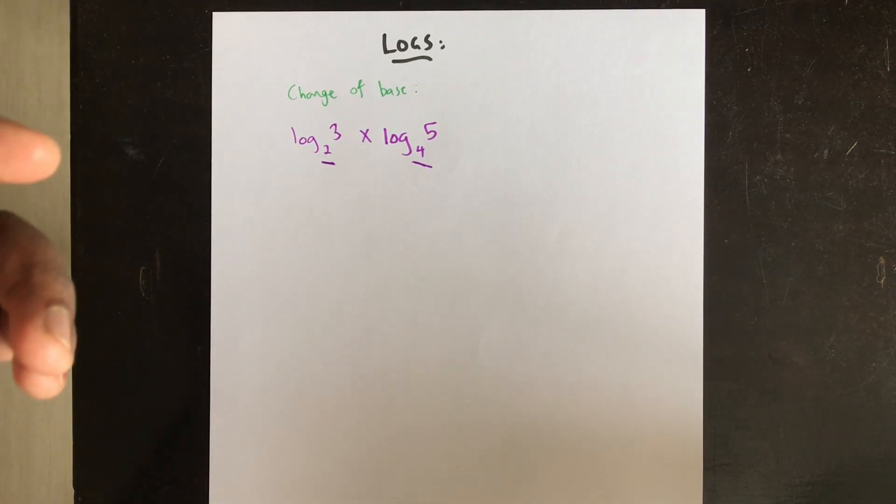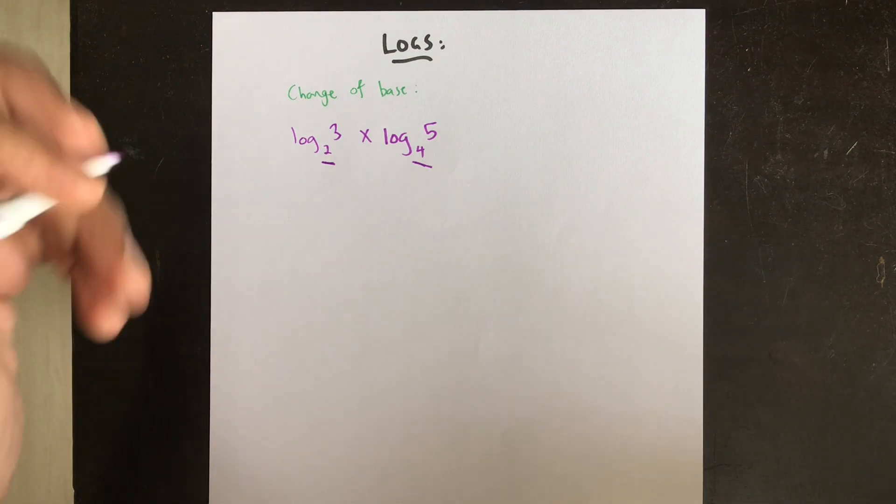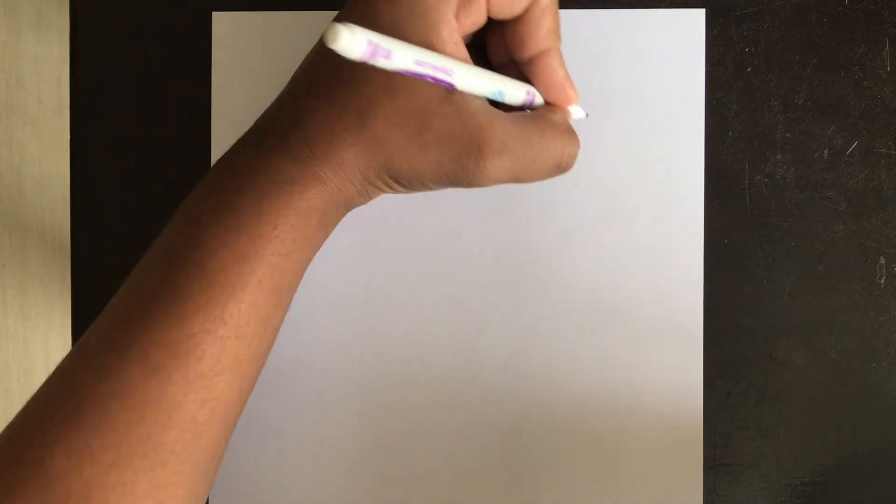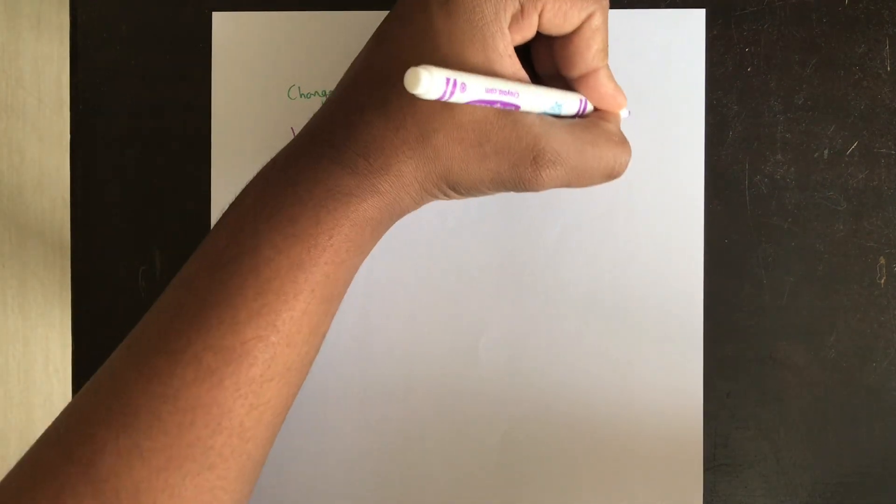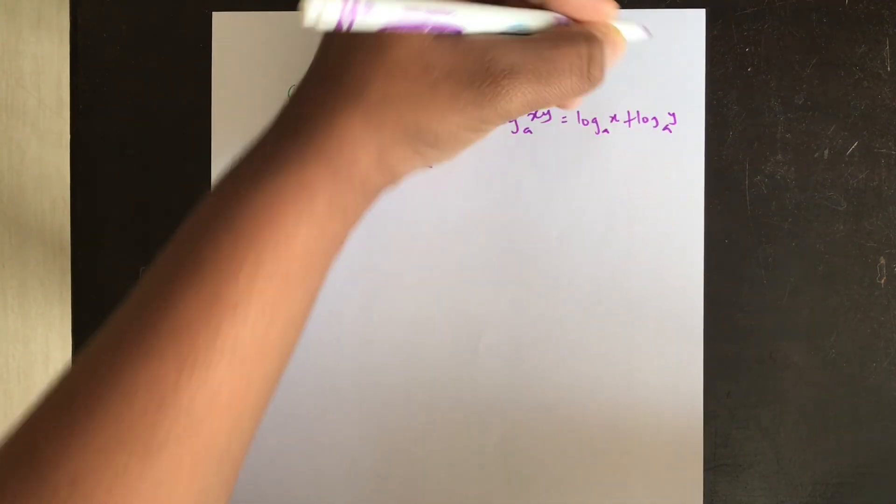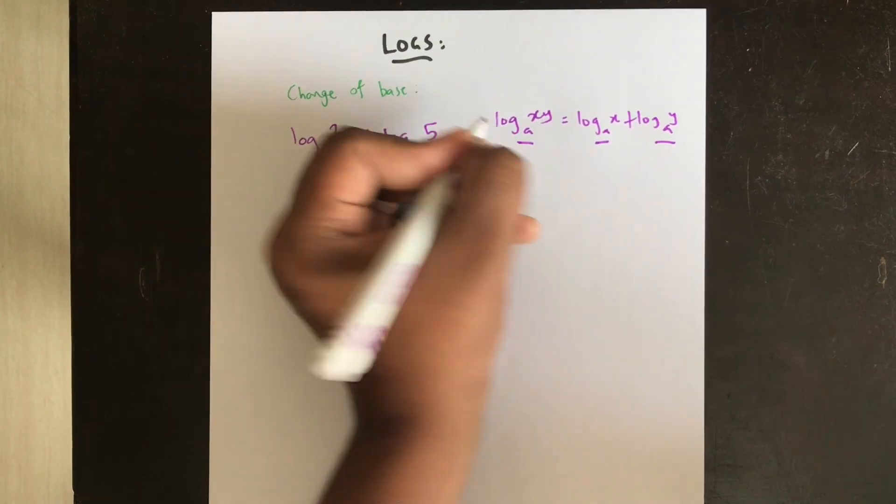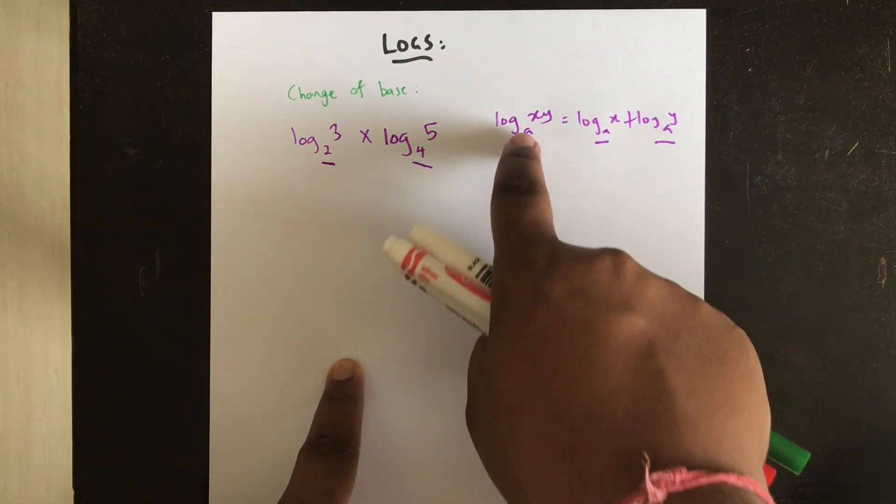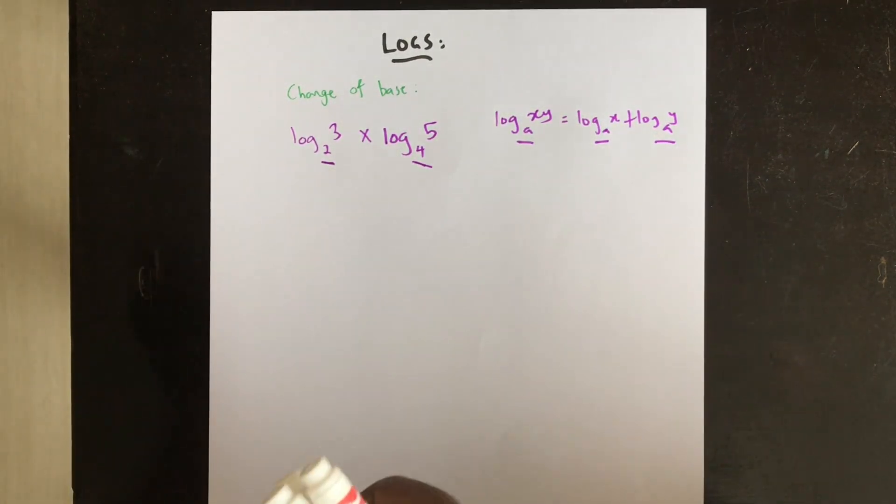If we notice in the previous videos, the rules of logs applied only when the base was the same. For something like log xy base a, this is the same as this, and this only applies if a is the same throughout. Therefore we use the rule of change of base to make sure that we can use these simple rules so that we can get an answer.